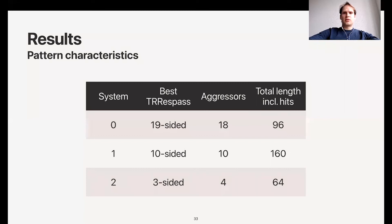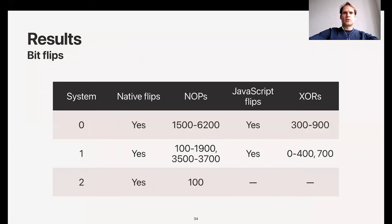Now on to the results. We tested our attack on three systems. The best Trespass patterns are reported here: 80-sided, 10-sided, and 3-sided. We made these numbers even because we have our two sets, so this became 18, 10, and 4. We also reported the total length including hits. The bit flips: we were able to trigger bit flips natively with these self-evicting patterns from all systems, and on JavaScript on the first two systems.